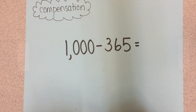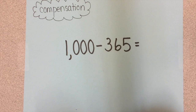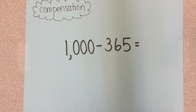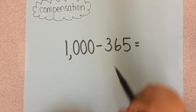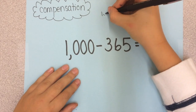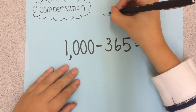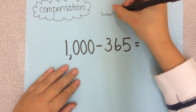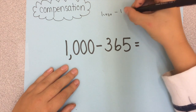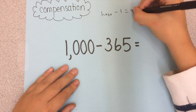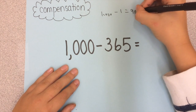I like the strategy because it's easier than regrouping, which can make you so mixed up. With compensation, all you have to do is take away 1 and start subtracting. Step 1, all you have to do is 1000 minus 1 equals 999.